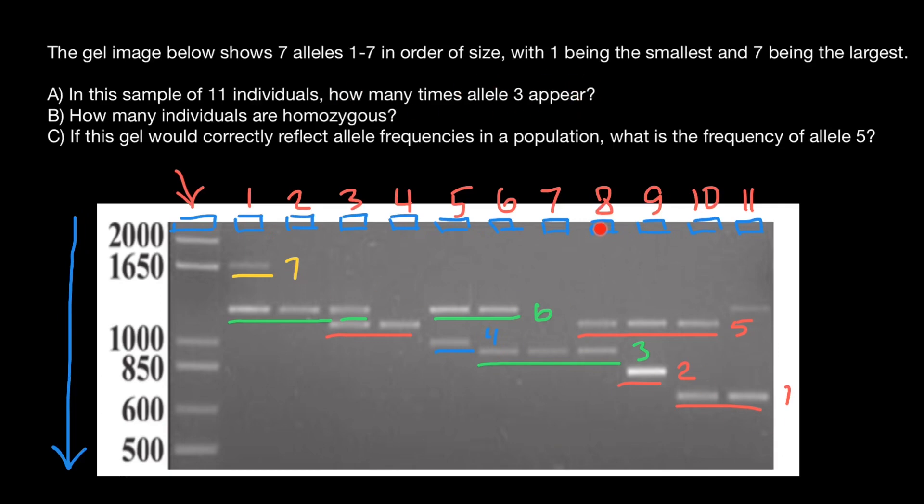How many times does allele number three appear? One, two, and this is allele number three. So one, two, and three. Why do I count this as two alleles? Because this person, as you see, doesn't have any other alleles. That means that this person is homozygous for this allele number three, and in this band he actually has two alleles. So one, two, three, and four. This person is heterozygous, so I count this allele only once. So one, two, three, and four. This is going to be the answer for the first question: it appears four times.